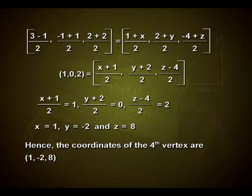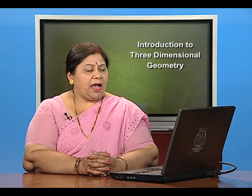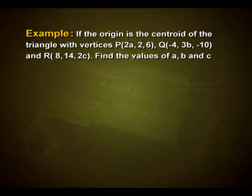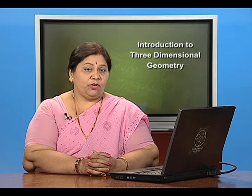Hence the coordinates of the fourth vertex D are (1, −2, 8). We have one more example: if the origin is the centroid of the triangle with vertices P(2a, 2, 6), Q(−4, 3b, −10), and R(8, 14, 2c), find the values of a, b, and c.